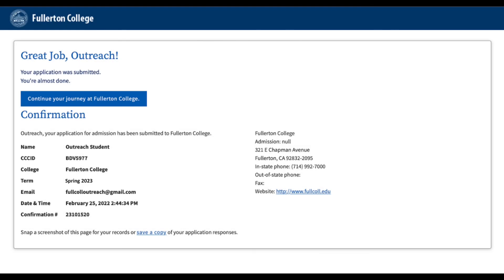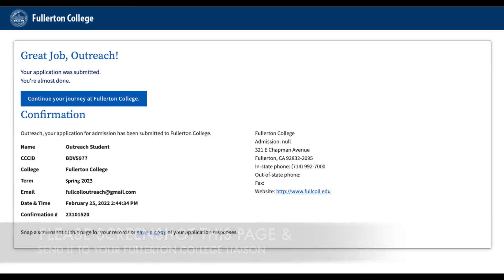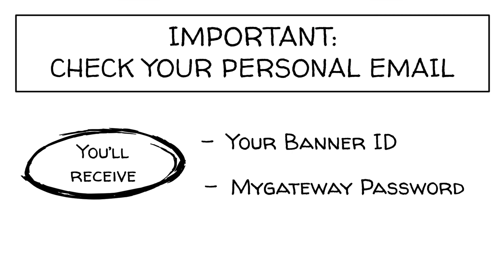After submitting your online application, you will then see a confirmation page. Please check your email for important information such as your College ID number and password. It's important to check your email because your Banner ID and My Gateway Password will be sent to your email. You will need your Banner ID and My Gateway Password to log into your My Gateway account.